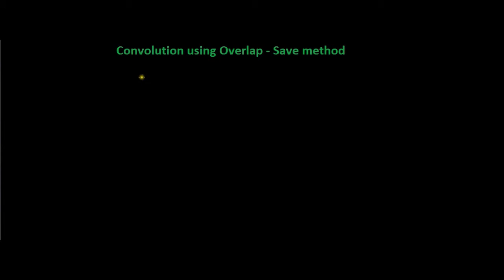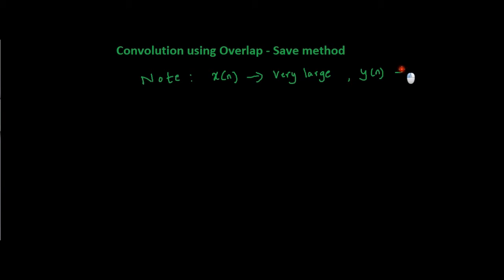Another note I want to add: say if x of n is a very large sequence and y of n is a small sequence, and we want to find convolution of these two sequences — z of n equals x of n convolved with y of n — in these cases we use the overlap save method or overlap add method because it will save memory and reduce the calculations. Keeping this in mind, we will solve an example to find convolution using the overlap save method.